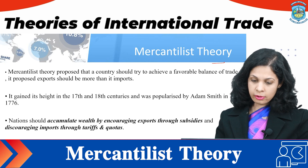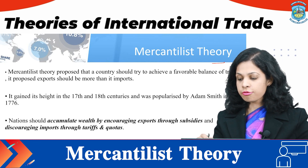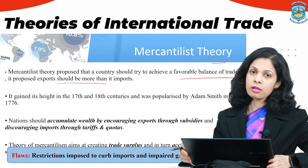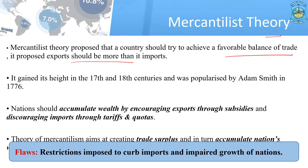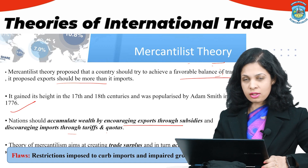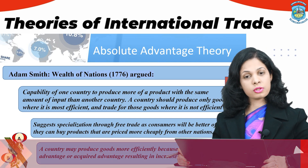The mercantilist theory proposes that a country should try to achieve a favorable balance of trade — a surplus of exports over imports. This theory was prominent in the 17th and 18th centuries and was critiqued by Adam Smith in 1776. Nations were encouraged to accumulate wealth by promoting exports through subsidies and discouraging imports through tariffs and quotas. However, restrictions on imports impaired the growth of nations, giving way to Adam Smith's theory.